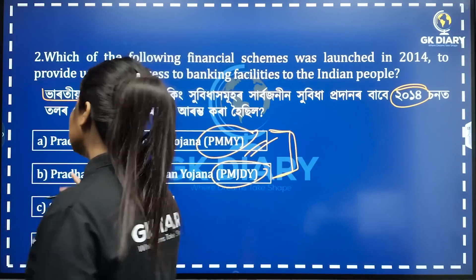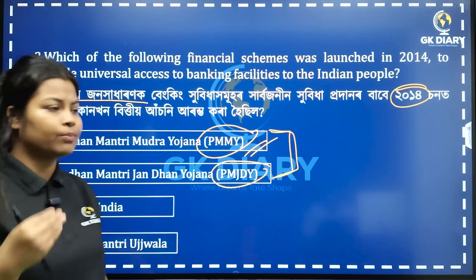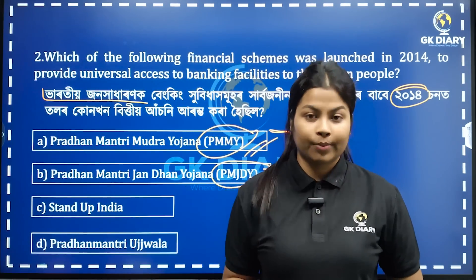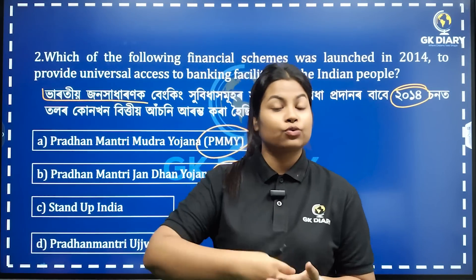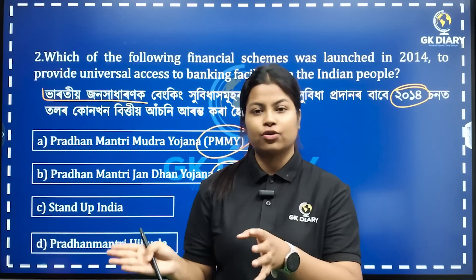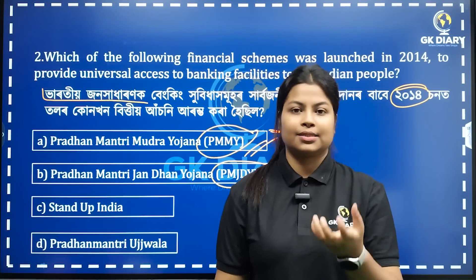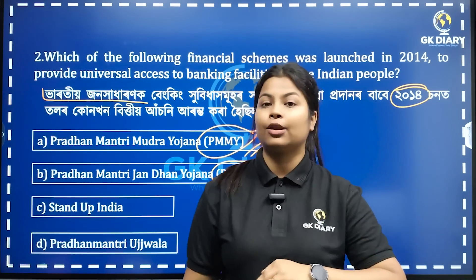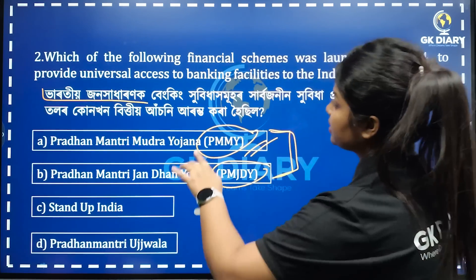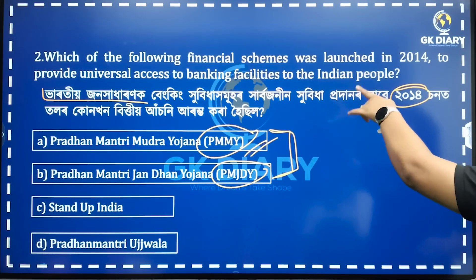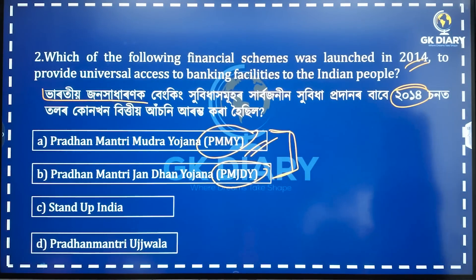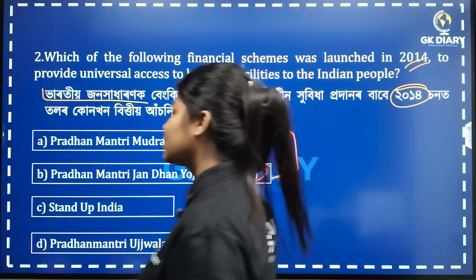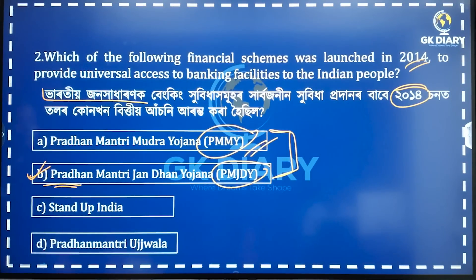So the option of Stand Up India — one thing is that when the government provides a loan to the government. We have to provide a loan for the following financial scheme in 2017, which provides universal access to banking facilities to the Indian people. So Option A and B is the correct answer.